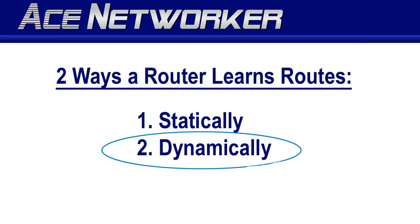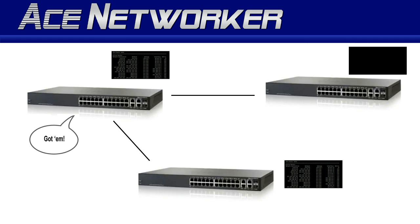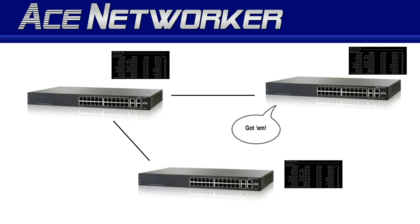Dynamic routing, on the other hand, is an excellent choice for medium to large-sized networks. When you're using dynamic routing, routers actually learn about network routes and update their tables automatically. They learn these routes from other routers around them. New network routes are added, outages are dropped or rerouted, and changes are updated on the fly based on how a particular routing protocol functions.